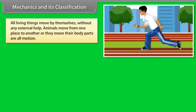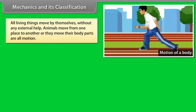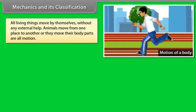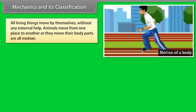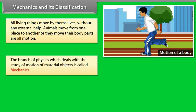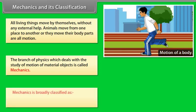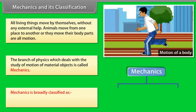Mechanics and its classification: All living things move by themselves without external help. Animals move from one place to another, or they move their body parts — all of these are motion. The branch of physics which deals with the study of motion of material objects is called mechanics. Mechanics is broadly classified as: one, statics; and two, kinematics.